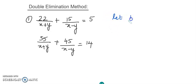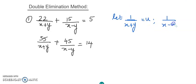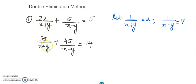Here we will say: let 1 upon x plus y equals u, and 1 upon x minus y equals v. Now, this substitution can be done only if both equations have the same types of denominators, otherwise it is not possible. So you have to check that first and then assume it. Here both equations have x plus y in the denominator and x minus y also in the denominator, so it is possible.